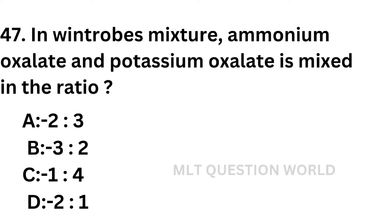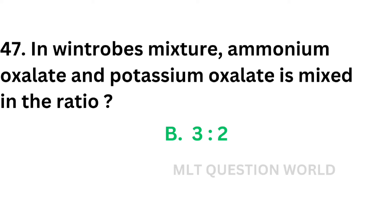Question number 47: In Wintrobe's mixture, ammonium oxalate and potassium oxalate are mixed in what ratio? Option A: 2:3, option B: 3:2, option C: 1:4, option D: 2:1. Wintrobe's mixture is also called double oxalate, Heller's and Paul's mixture, or balanced oxalate. Ammonium oxalate and potassium oxalate in the ratio 3:2 is used for Wintrobe's mixture. The correct answer is option B, 3:2.